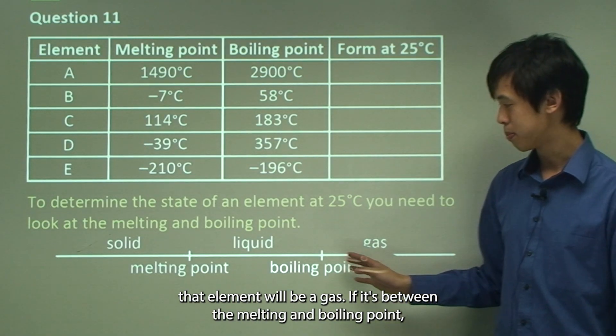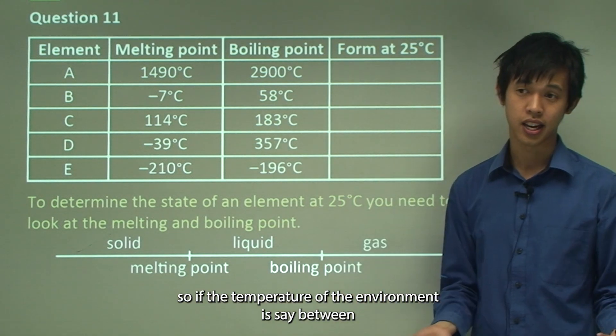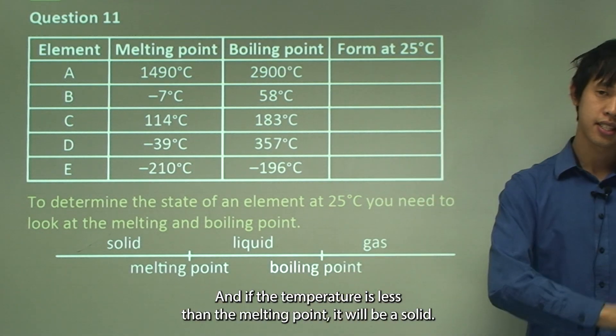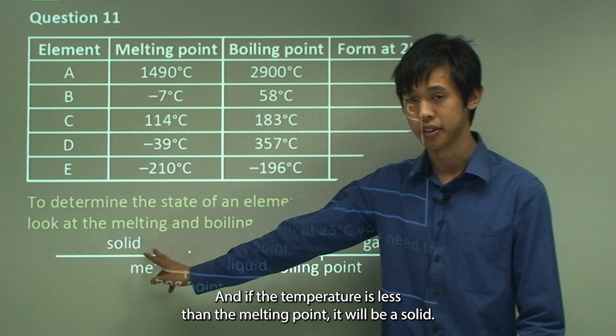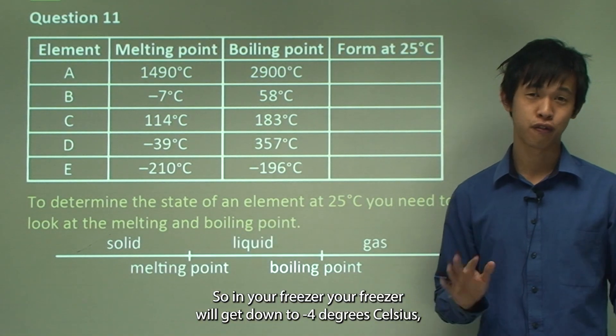If it's between the melting and boiling point, so if the temperature of the environment is between both the melting and boiling point, it will be a liquid. And if the temperature is less than the melting point, it will be a solid.